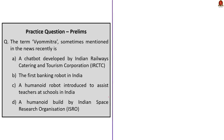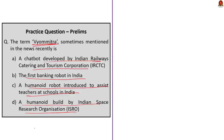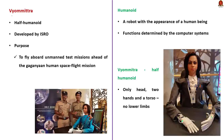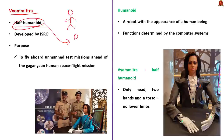The next question reads: the term Vayu Mitra, sometimes mentioned in the news recently, is: Option A, a chatbot developed by IRCTC; B, the first banking robot in India; C, a humanoid robot introduced to assist teachers at schools in India; D, a humanoid built by ISRO. Before seeing the answer, let's have a discussion. Actually, Vayu Mitra is a half-humanoid. While a humanoid is basically a robot with the appearance of a human being, Vayu Mitra is a half-humanoid because she has only a head, two hands and a torso, and she does not have lower limbs.